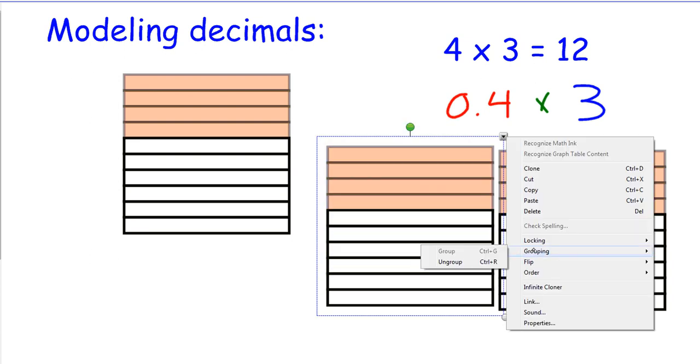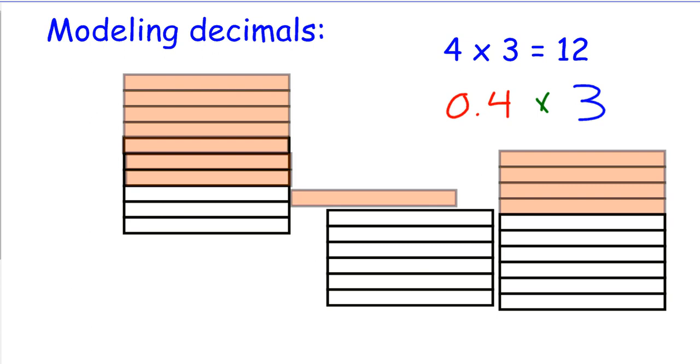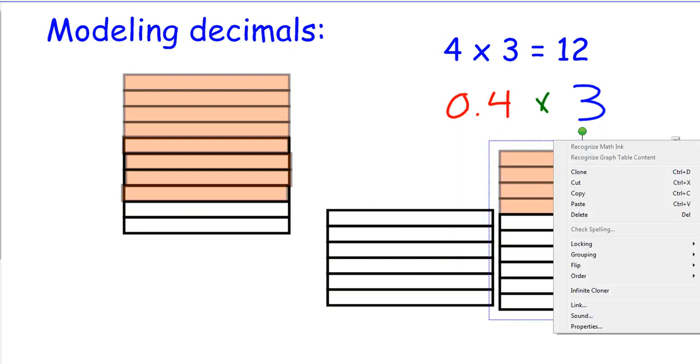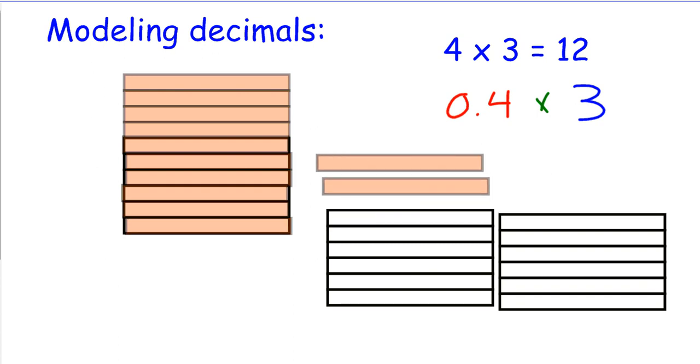that's 3 times 4 tenths. Now, if we make these into individual parts, I can actually move them over. So we can see that now I have 6 tenths here, 7 tenths, 8 tenths, and I'll do the same to this one. So we can see again, I have 9 tenths, 10 tenths, which is a whole, and there are two more remaining. So I have 1 and 2 tenths.